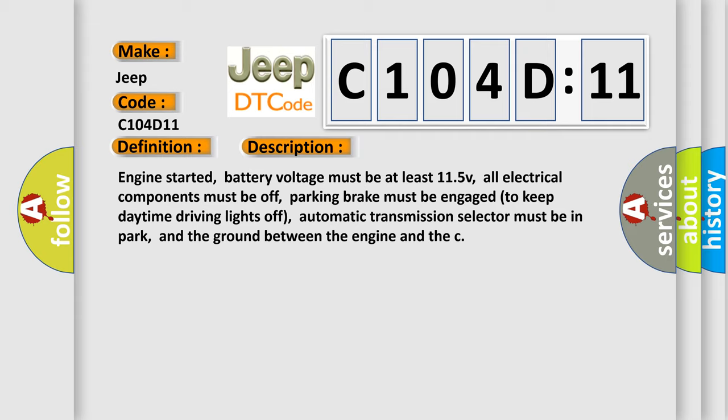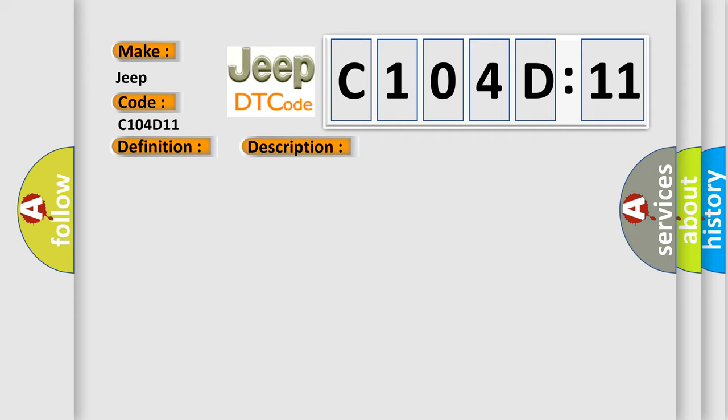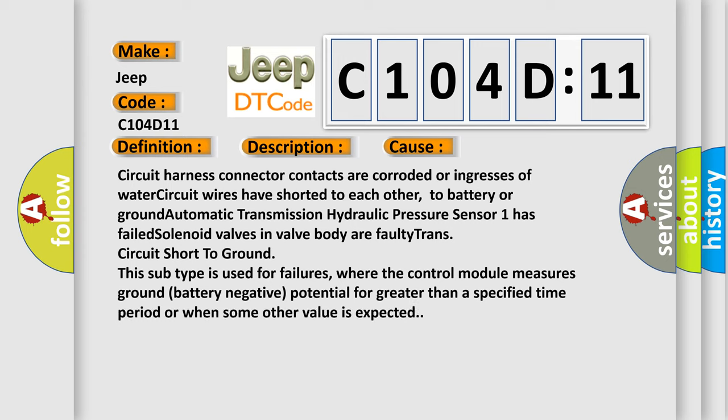This diagnostic error occurs most often in these cases. Circuit harness connector contacts are corroded or ingresses of water, circuit wires have shorted to each other, to battery or ground. Automatic transmission hydraulic pressure sensor one has failed, solenoid valves in valve body are faulty. Trans circuit short to ground. This subtype is used for failures where the control module measures ground battery negative potential for greater than a specified time period or when some other value is expected.